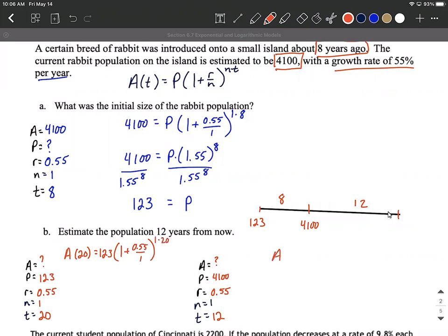Or we could calculate it as A of 12, 12 years into the future. If we start with 4100 rabbits, today's number, 1 plus 0.55 divided by 1 raised to the 1 times 12 power.